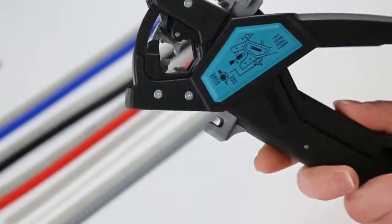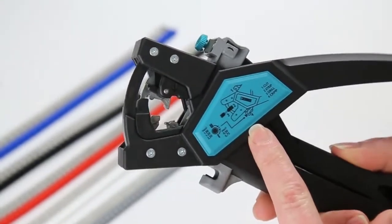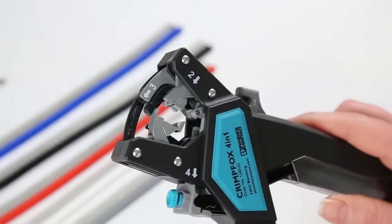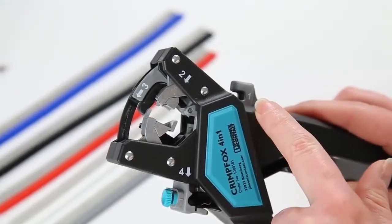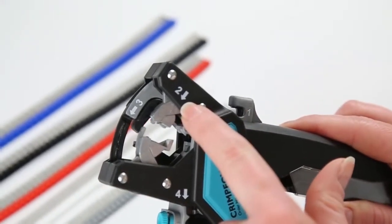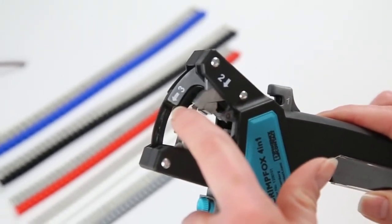The CrimpFox 4-in-1 is numbered and displays a pictogram for easy operating instructions. Number 1 is the cutter, number 2 is the stripper, number 3 is the twister, and number 4 is the crimper.